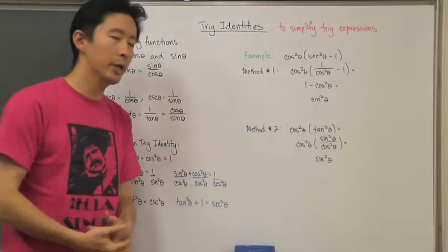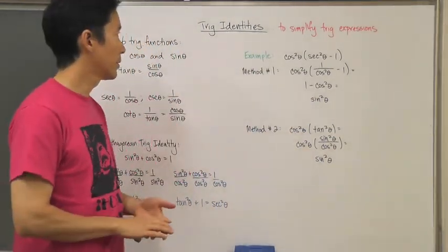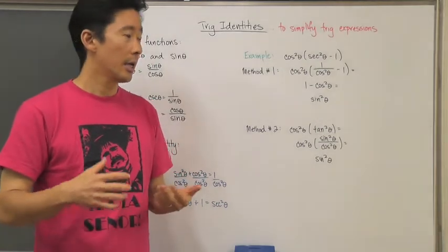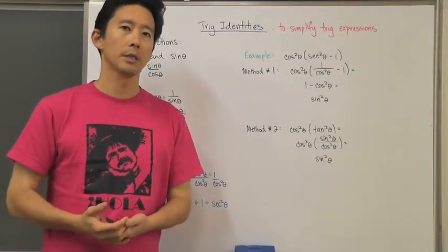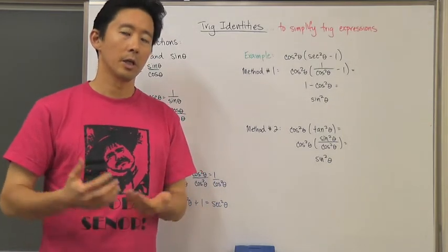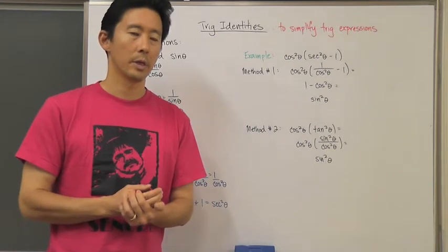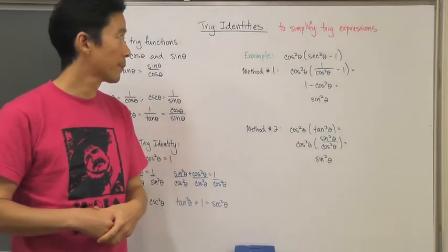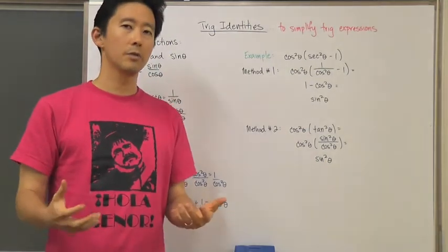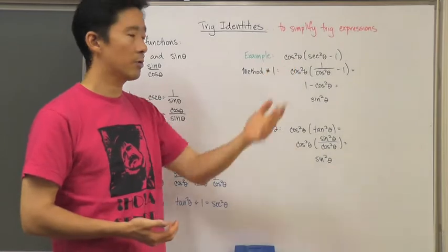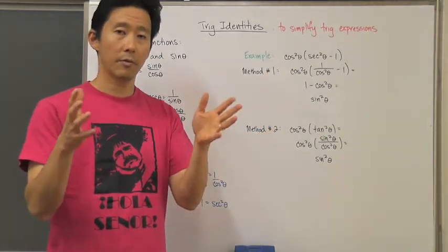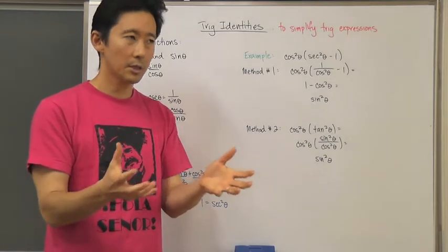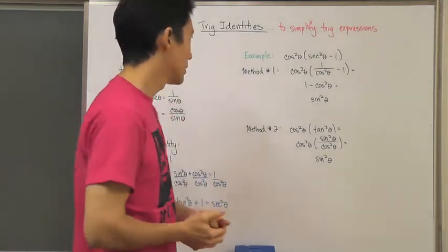Let's take a look at trig identities. An identity is an equation such that no matter what you put into the variables, the equation will always be true. Generally speaking, trig identities are used to simplify trig expressions. If you have an expression or one side of an equation, there is often a need to simplify it or change its form so that you can work with it productively.